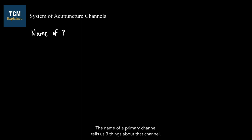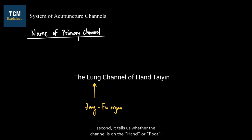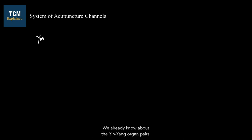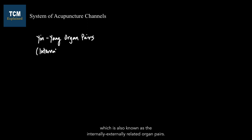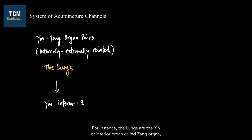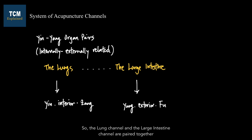The name of a primary channel tells us three things: first, which zang or fu organ the channel is associated with; second, whether the channel is on the hand or foot; and third, the yin-yang identity of the channel according to the theory of six channels. Understanding the naming of the 12 primary channels helps us better understand the relationship between channels. We already know about the yin-yang organ pairs, also known as the internally-externally related organ pairs. For instance, the lung is the yin or interior zang organ paired with the large intestine, the yang or exterior fu organ. The 12 primary channels follow the same pairing, so the lung channel and the large intestine channel are paired together.